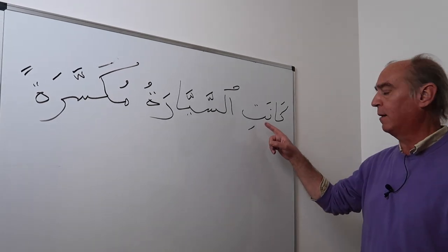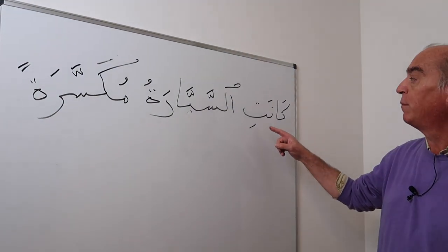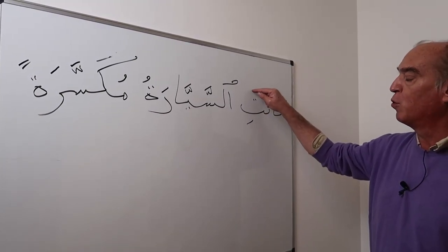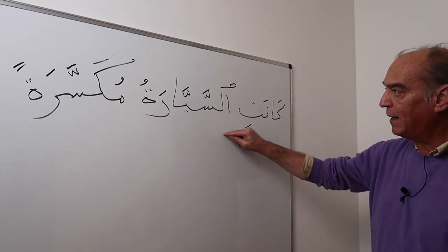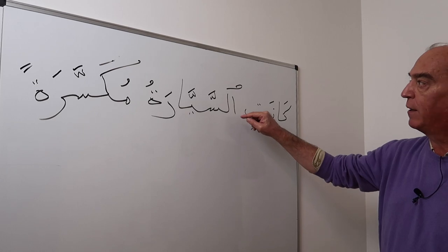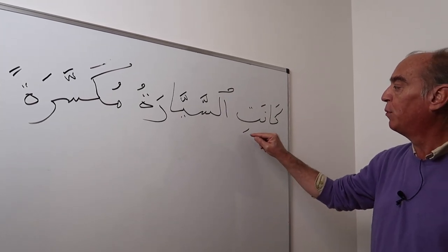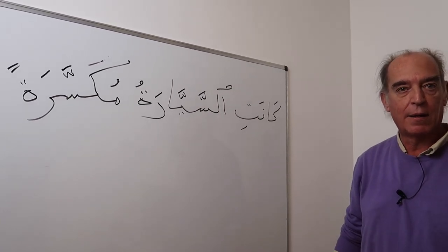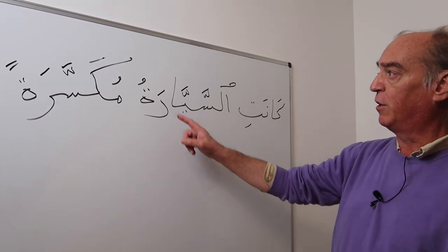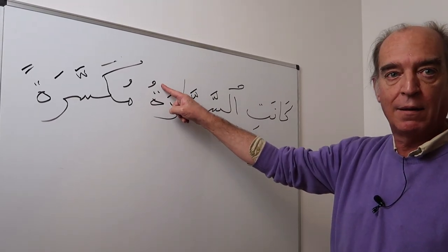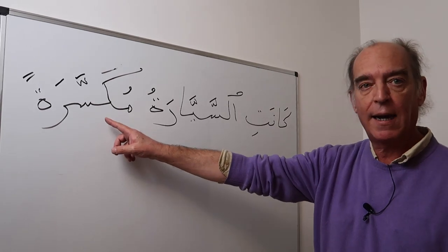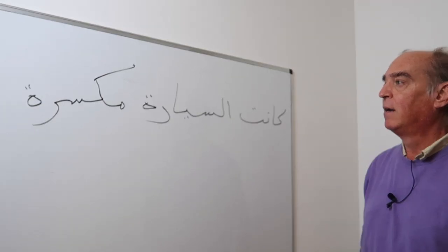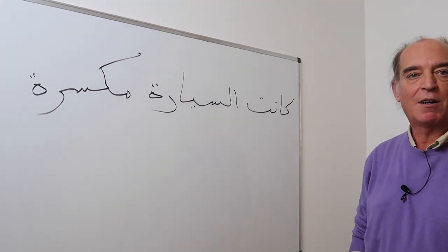In the third feminine form — fa'alat, katabat — even in kana there is a sukun. But here we have to tie with the article which takes the wasla, and then you put a kasra in order to say: kana ad-darsu muqassara-tan. So this is the ism kana, which is in the nominative case and is the subject of kana, and this is the khabar kana, which has to go in the accusative.